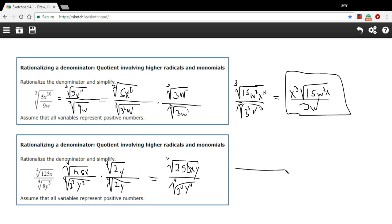And simplifying the bottom, we're going to get just 2y. And let's see, the top, I don't think there's anything in there that I can take the fourth root of, not 250,